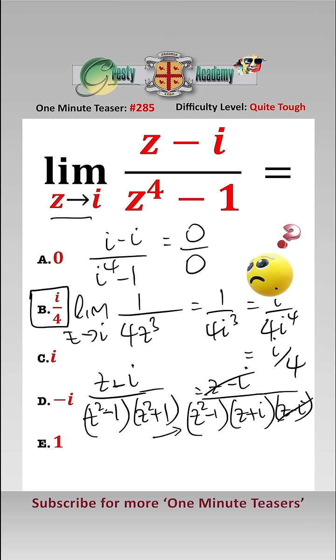Now we can put i in directly, and that gives us 1 over i squared minus 1 times i plus i, which equals 1 over minus 2 times 2i, which equals i over 4, which again is answer b.